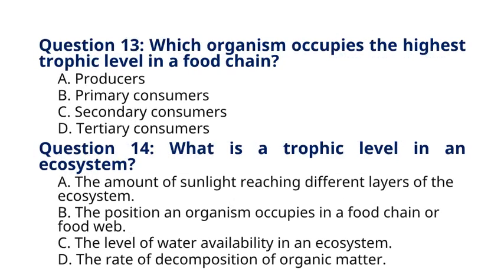Question 13. Which organism occupies the highest trophic level in a food chain? A. Producers. B. Primary consumers. C. Secondary consumers. D. Tertiary consumers. The correct answer to question 13 is option D, Tertiary consumers. Explanation: Tertiary consumers are at the highest trophic level in a food chain and typically feed on secondary consumers.